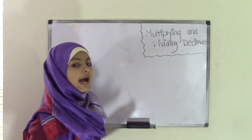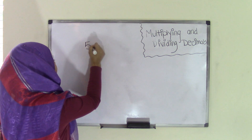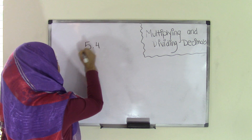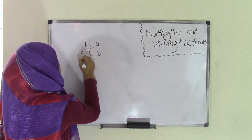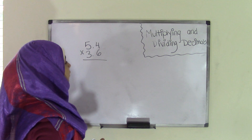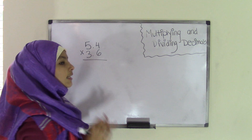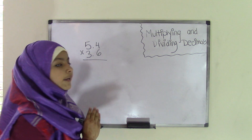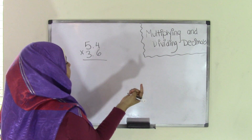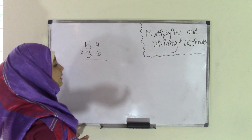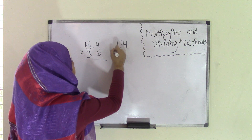First, we're going to be doing how to multiply decimals. So, let's say we have the two decimal numbers 5.4 times 3.6. We have our problem right there, which is 5.4 times 3.6, and in order to multiply this, just keep this in mind — forget all about the decimal points. So, just say that we don't have 5.4 and 3.6, we just have 54 times 36.